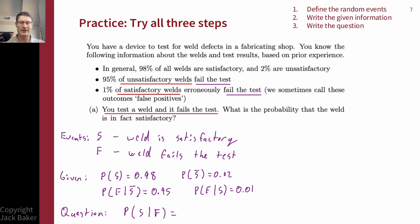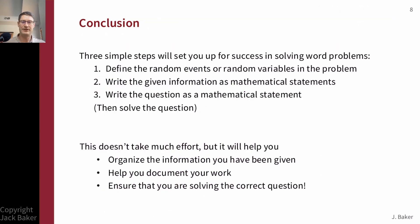Now I've carefully laid out: what are my events, what are the known probabilities, and what's the probability I'm trying to solve for. At this point I can start putting this information together and trying to solve the question. That's a topic for a different video, but I'm all squared up — if I know about conditional probabilities, this shouldn't be too difficult to move forward with solving.